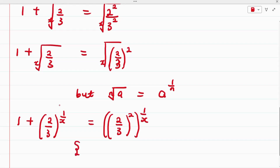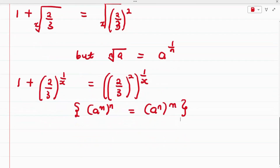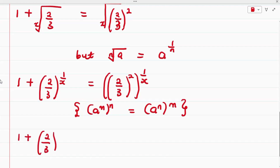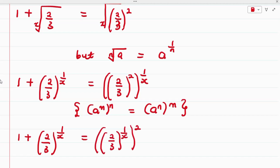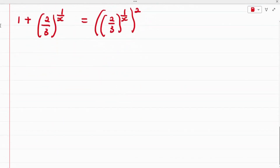Applying the property that a raised to the power of m, raised to the power of n, equals a raised to the power of n raised to the power of m, we get 1 plus (2/3) raised to the power of 1/x equals (2/3) raised to the power of 1/x, raised to the power of 2.